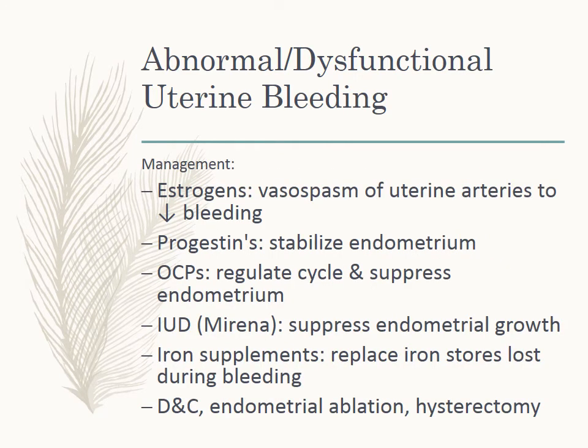To treat dysfunctional uterine bleeding: estrogens to cause vasoconstriction in the uterine arteries and decrease bleeding, progesterone to stabilize the endometrium, oral contraceptive pills to regulate the cycle and suppress the endometrial, the Mirena IUD to suppress endometrial growth, iron supplements to replace iron stores lost during bleeding, and possibly a D&C, endometrial ablation, or hysterectomy.